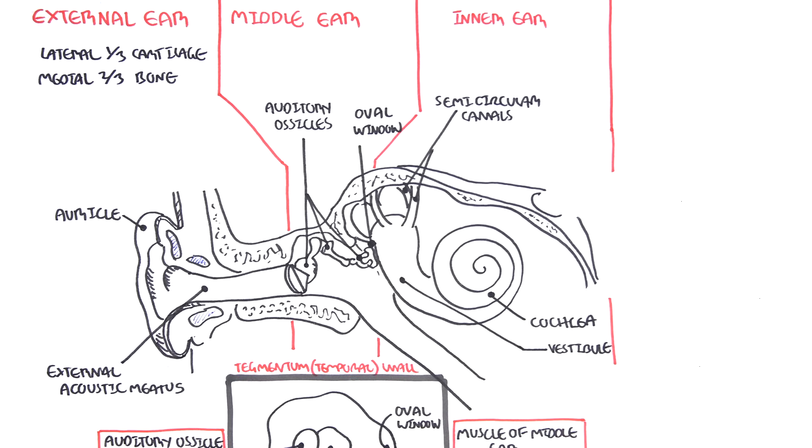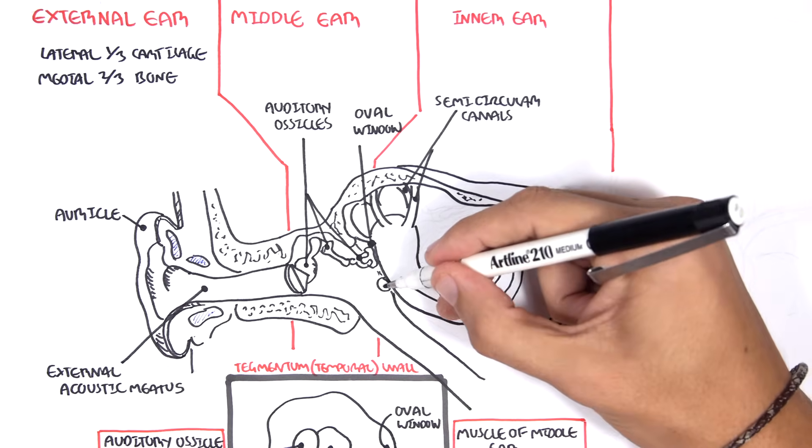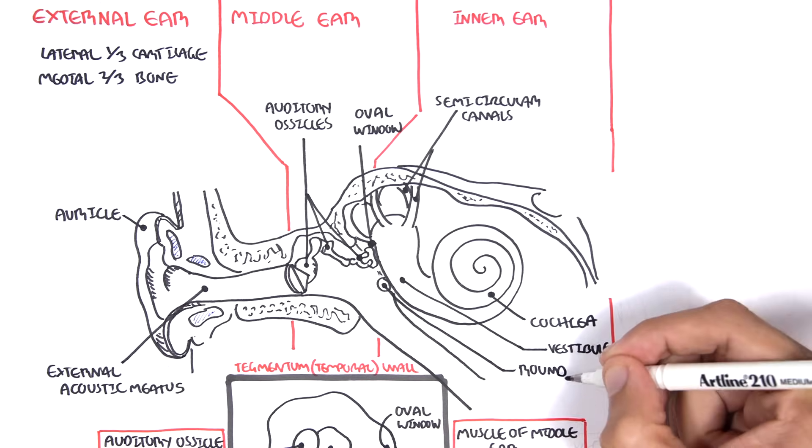But it's important to know that signals being received by the cochlea, vibrating the fluid, have to come out somehow to adjust the pressure. And it comes out through the round window of the cochlea here.